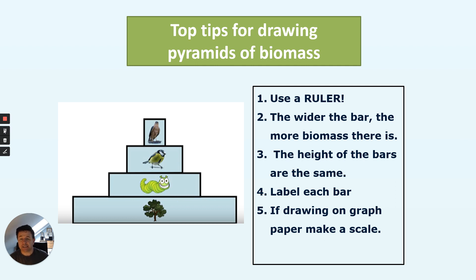There's a few key things you need to remember. The wider the bar, the more biomass there is. The heights of the bars at each trophic level stay the same. You have to label each bar—you can label it with the name of the plant or animal, or with trophic levels. And you must make it to scale if you're using graph paper.